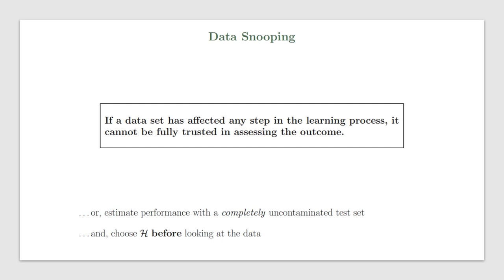Another very common trap for data science or machine learning practitioners is something known as data snooping. We've talked about it throughout this course when we said that we shouldn't be looking at the data before we decide which hypothesis set we would be applying. Data snooping means that data shouldn't affect the process of my hypothesis generation.